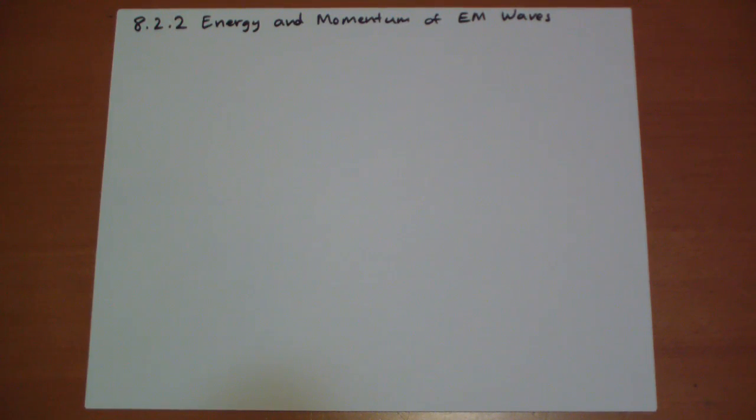We can easily calculate the energy and momentum of EM waves. In this section I also introduce a new quantity called intensity. Hi, this is Jonathan Gardner and we're in section 8.2.2 of Griffith's Introduction to Electrodynamics, second edition.